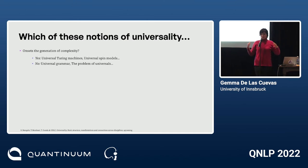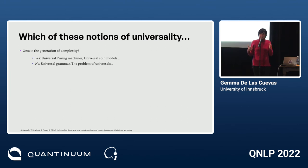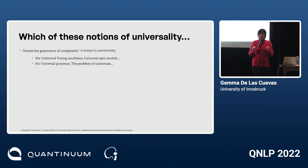We are doing this top-down approach, so what do we learn by seeing how this structure is instantiated in so many examples? We can ask which of these types of universality onsets the generation of complexity — meaning there's a very subtle jump to universality.